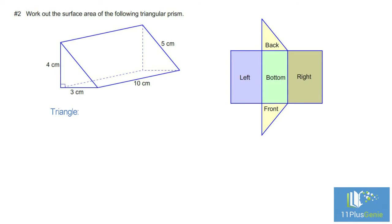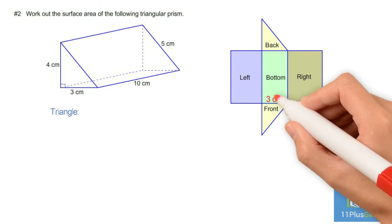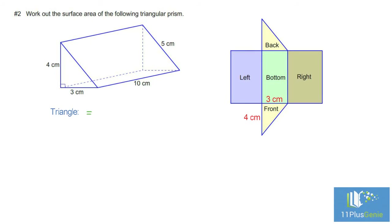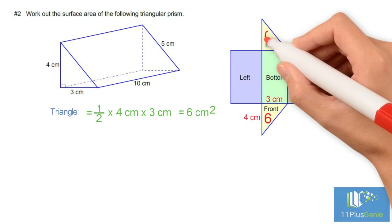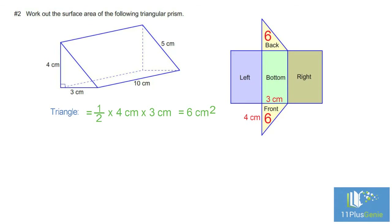Area of the triangle equals a half times the base times the height, which equals a half times four times three, which equals six centimeters squared. The triangle at the back has the same area: six centimeters squared.